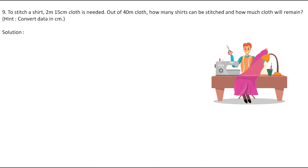Now let's move to the next question. This is the ninth question: to stitch a shirt, 2 meters 15 centimeters of cloth is needed. Out of 40 meters of cloth, how many shirts can be stitched and how much cloth will remain? They have told us to convert data into centimeters. Let's write the information: to stitch one shirt we need 2 meters 15 centimeters of cloth.